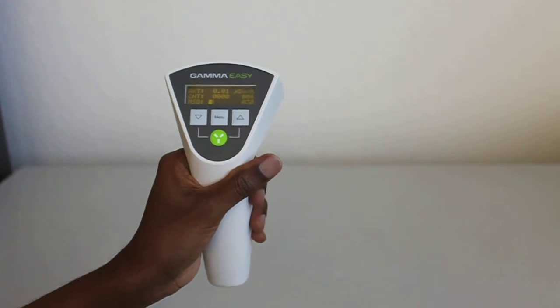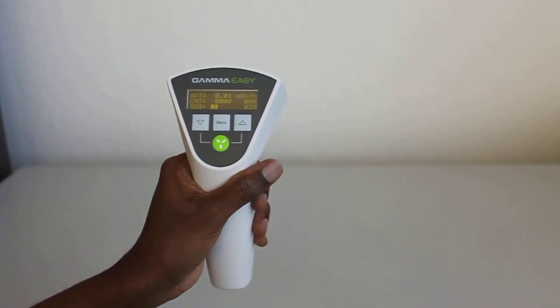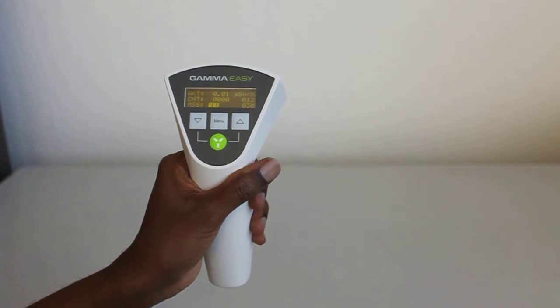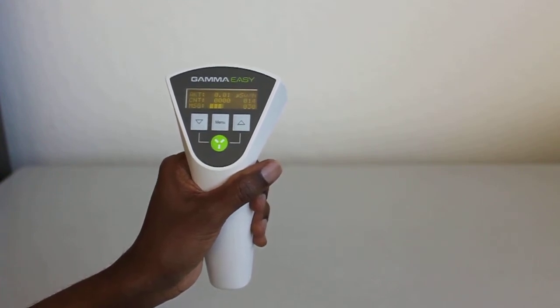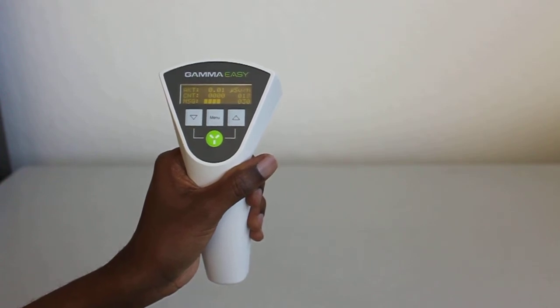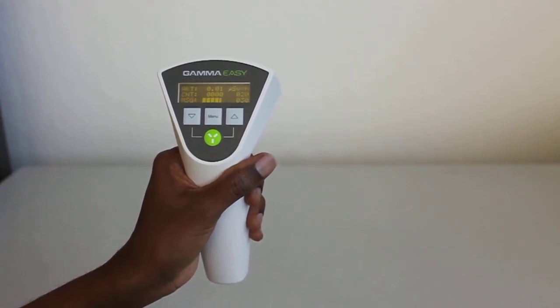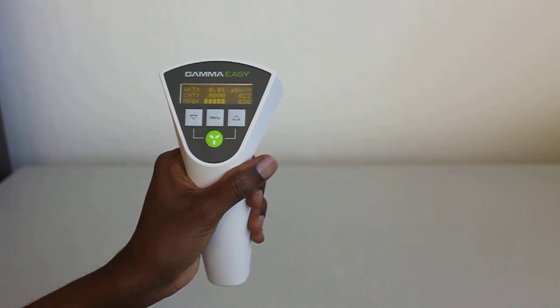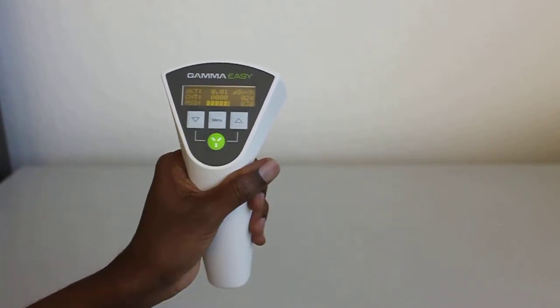The first line of measurements up there are in micro sieverts per hour and that's giving you an average reading. I think the default is 30 seconds, so it's giving an average reading in 30 seconds. The next line is the count.